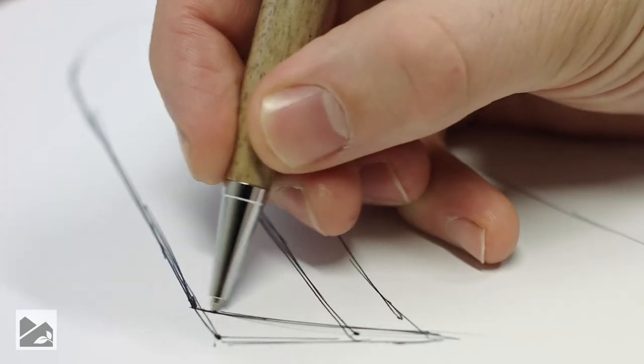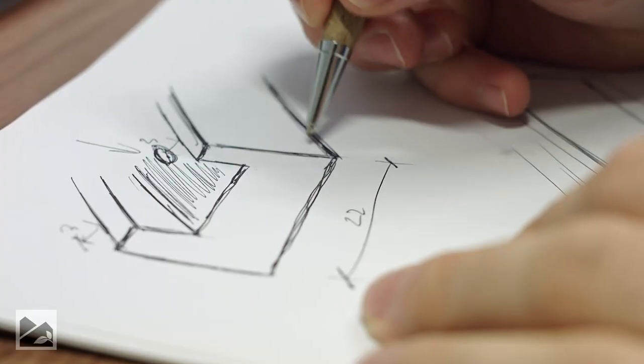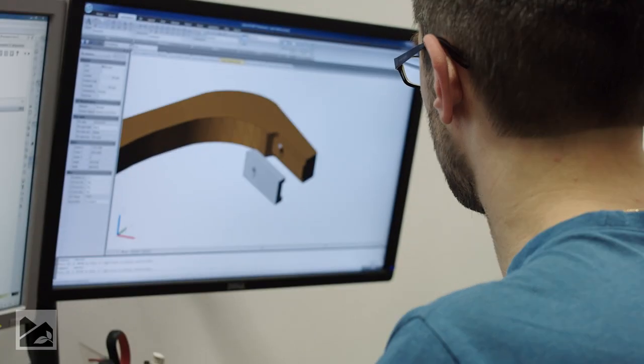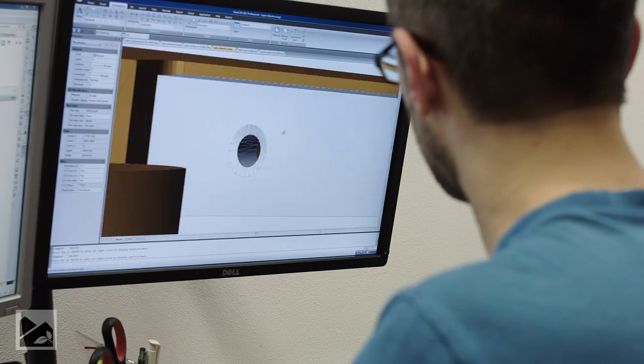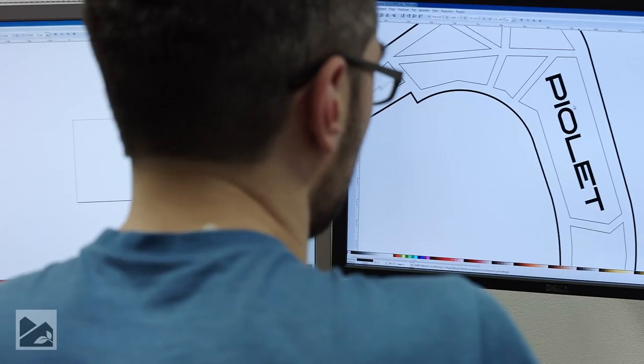A year ago, a group of local climbers contacted me. They needed a product as similar as possible to ice climbing pickaxes, which also wouldn't damage ascenders on internal climbing walls. What followed were the drawings and the creation of the final prototype using beech plywood.